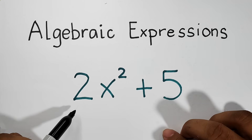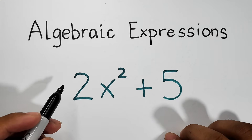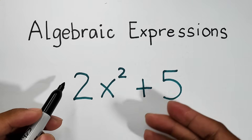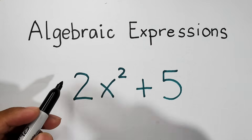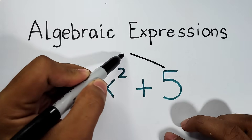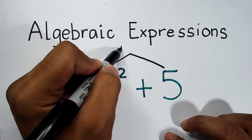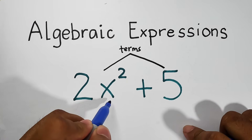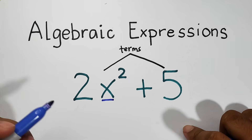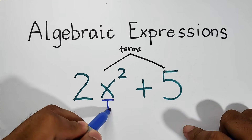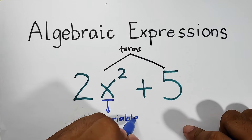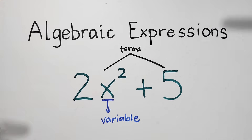The terms are counted based on the separation given by the operations — addition or subtraction. In this algebraic expression, we have 2 terms: 5 and 2x squared. These are the terms. Now aside from the terms, we also have what we call the variable. The variable is the letter or letters that represents numbers. So this is your variable — the variable is x.